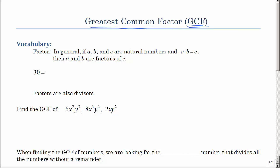Let's make sure we all know what a factor is. In general, if A, B, and C are natural numbers, and A times B equals C, then A and B are factors of C, meaning things you multiply together. So 30 has factors: 5 times 6 can be 30, 30 could be 3 times 10, 30 could be 2 times 15. 30 has lots of different factors.